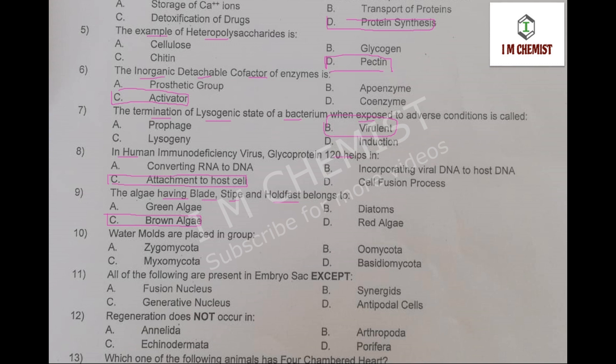MCQ number 10: water molds are placed in which group. Various options are given, but the right option is option number B, that is Oomycota. That is present at page 171 of your book.